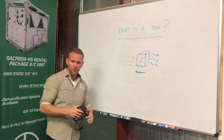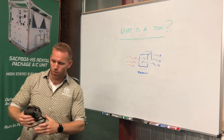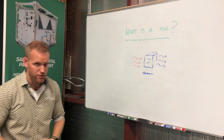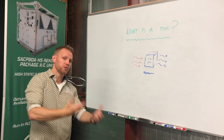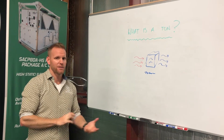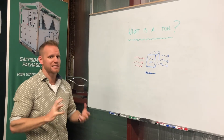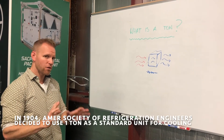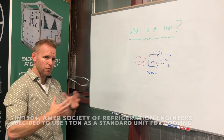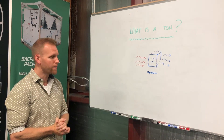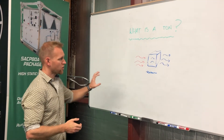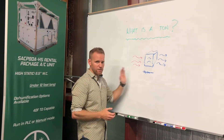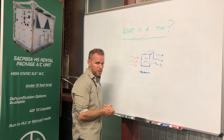Well, in the very early 1900s, about 1904, the American Society of Refrigerating Engineers — which ultimately became ASHRAE — decided that we need to standardize on that measurement. Around 1904 is when they said, okay, in North America we're going to use the ton when we start to define the quantity of energy required for air conditioning applications.